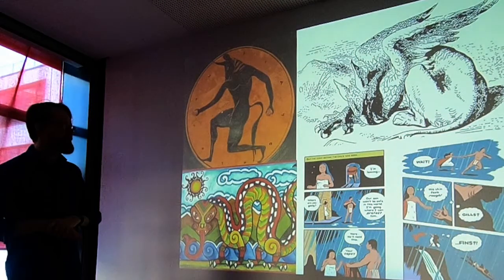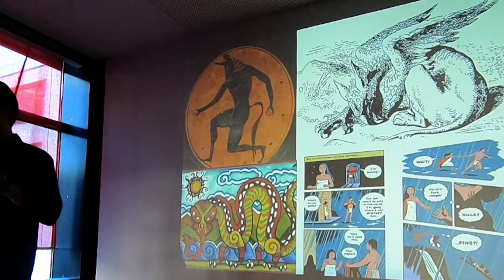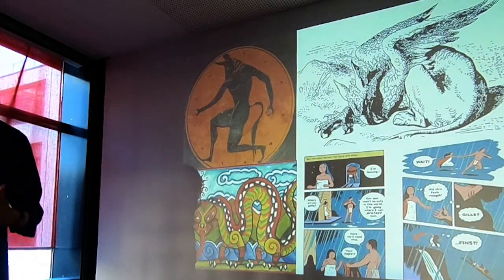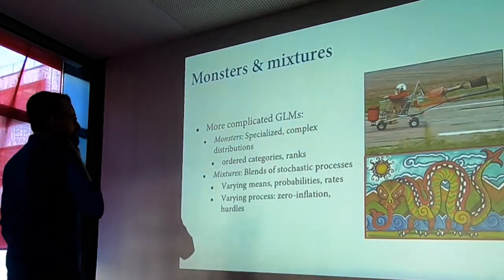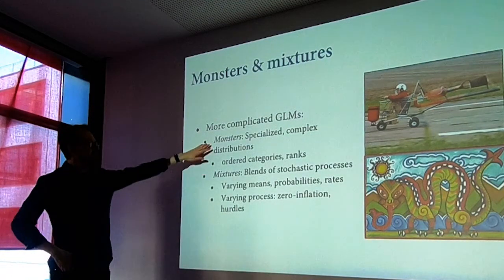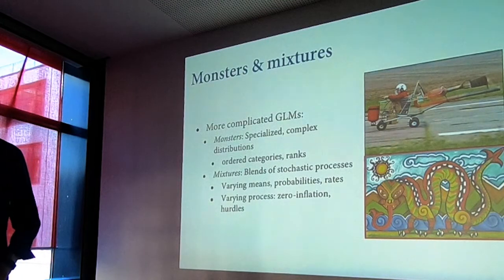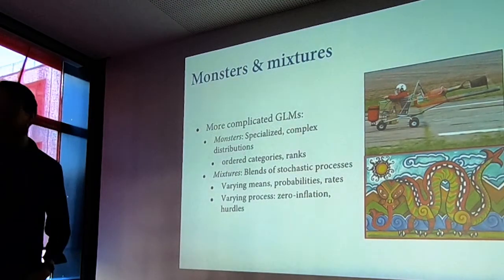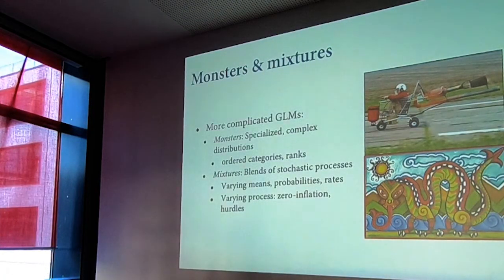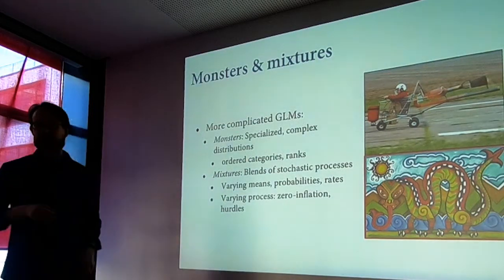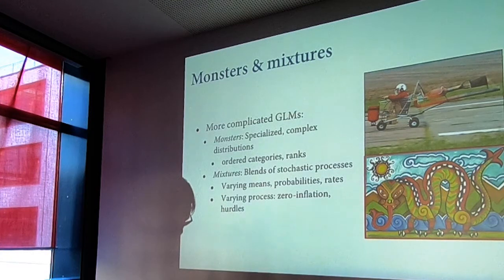GLMs are monsters in the classical sense — a monster has features of multiple animals. We can take link functions, outcome distributions, and linear model structures and hook them together in ways that help us model strange measurement situations. You can get more complicated GLMs — they're still GLMs, but they look a bit monstrous. The most useful of these monstrous things is mainly useful in the social sciences where we're often asking people to give us some subjective rating of their internal state.